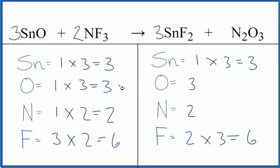This is a double displacement reaction. The tin here and the nitrogen, they're switching places. Tin starts with oxygen, but it ends with fluorine. Nitrogen starts with fluorine, but it ends with oxygen.